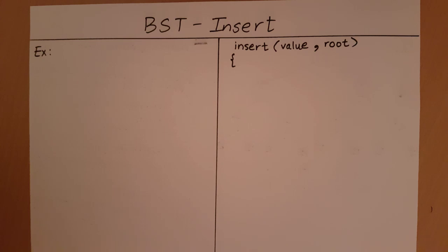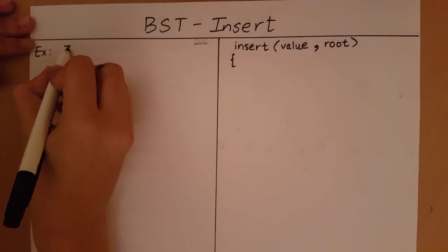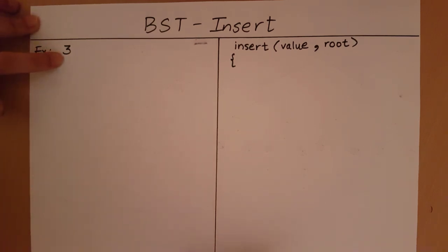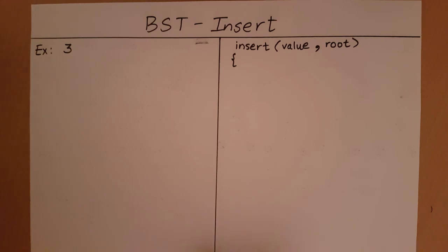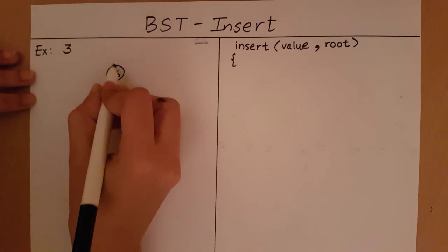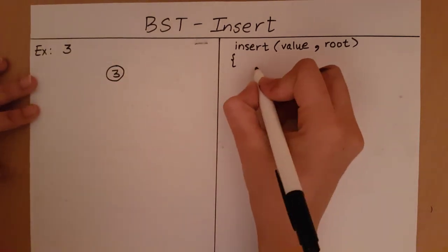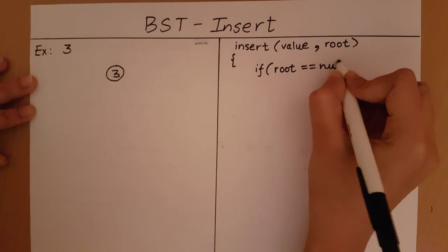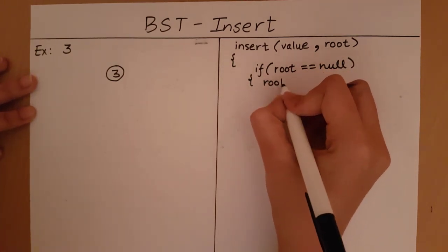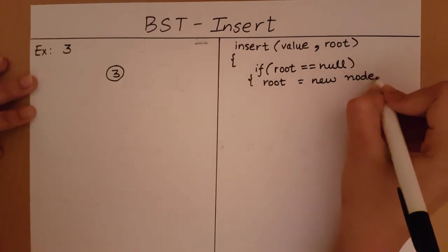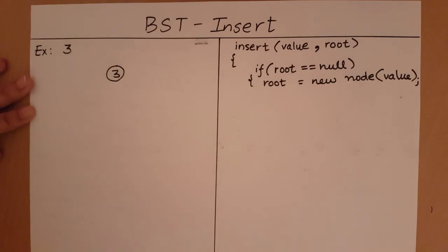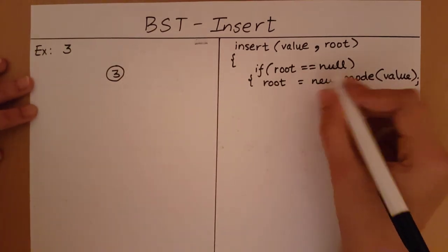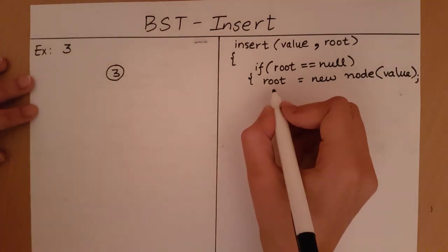Let's start inserting into the binary search tree. First, let me insert a number equal to 3. This is the first number I am going to insert, so there is nothing in my tree — my root is equal to null. In such a case, we say: if root is equal to null, then set the root to a new node with data equal to the value. Then we return.